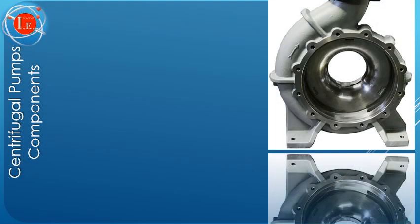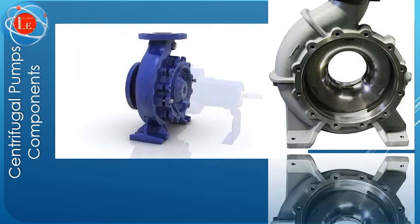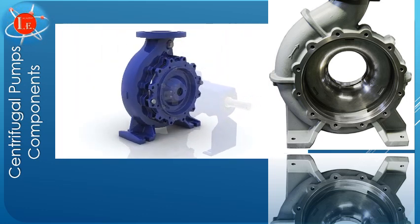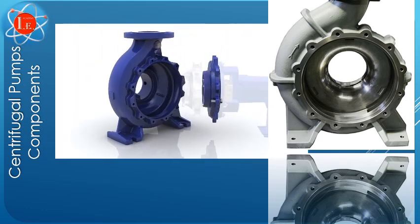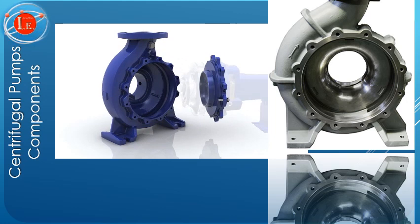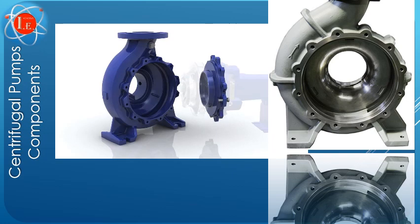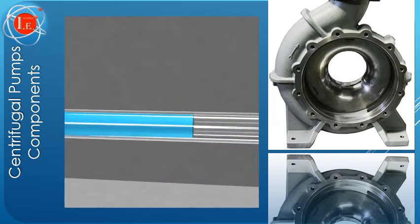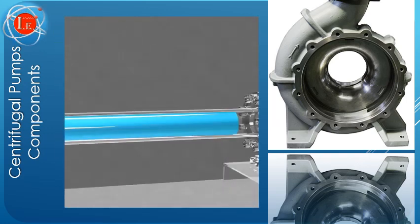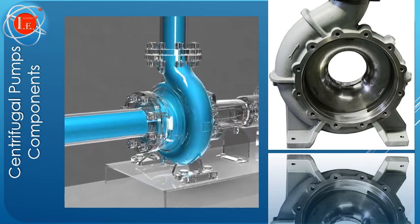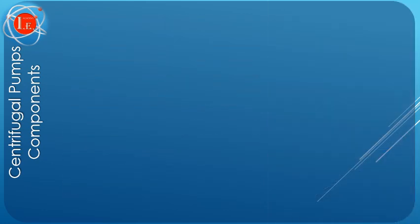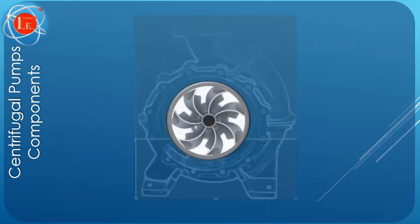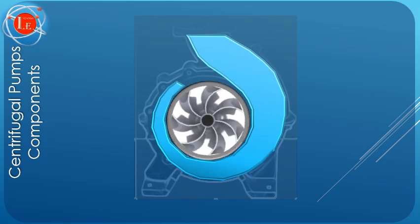The casing contains the liquid and acts as a pressure containment vessel that directs the flow of liquid in and out of the centrifugal pump. The volute is a curved funnel that increases in area as it approaches the discharge port. This volute receives the fluid being pumped by the impeller, slowing down the fluid's rate of flow.